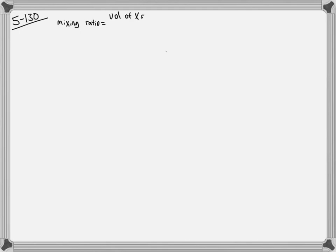This problem introduces the concept of the mixing ratio, which was also introduced in problem 129. The mixing ratio is simply an expression of concentration as a function of the volume of the particular species per total volume in parts per million — a parts per million volume ratio. Problem 29 defines the mixing ratio as the volume of the species in question at STP divided by the volume of the total gas at STP, times 10 to the 6.